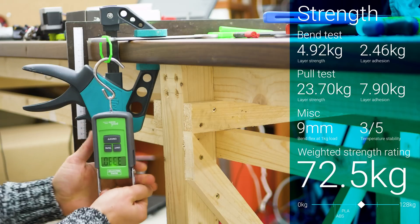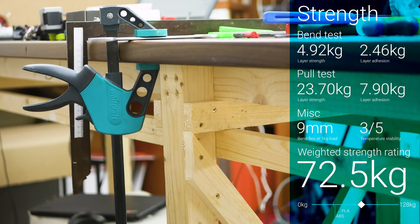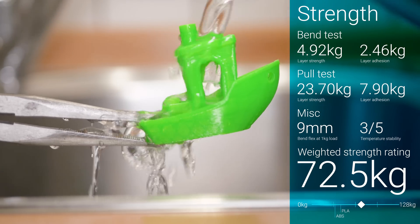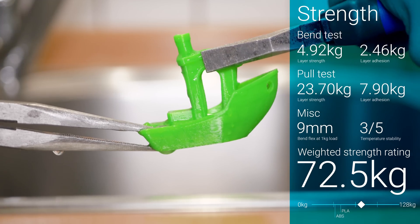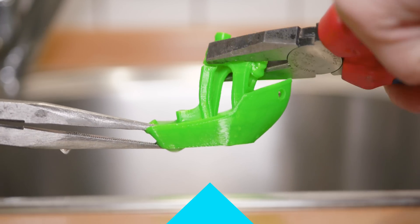Combined with good layer adhesion, this results in a top-tier 72.5 kilogram combined strength rating, which is currently only beaten by Tommen 910 and polycarbonate.